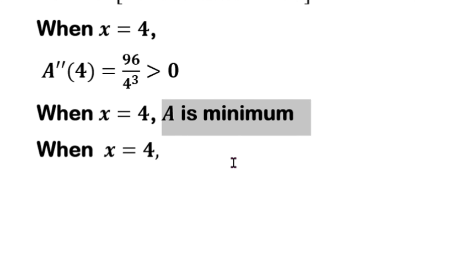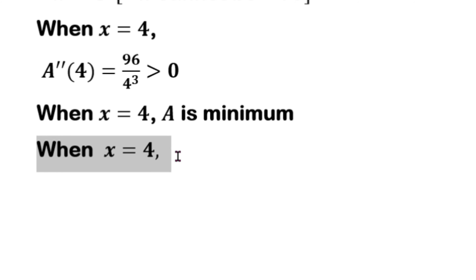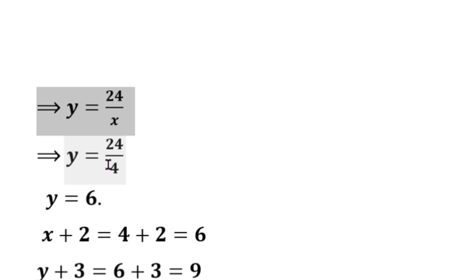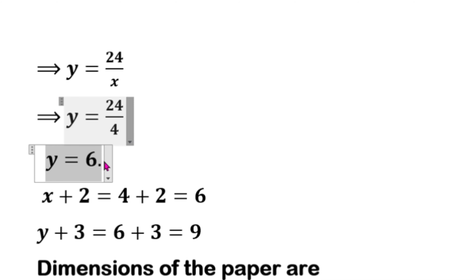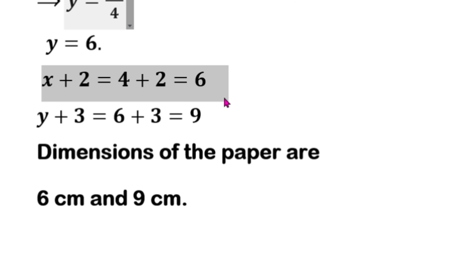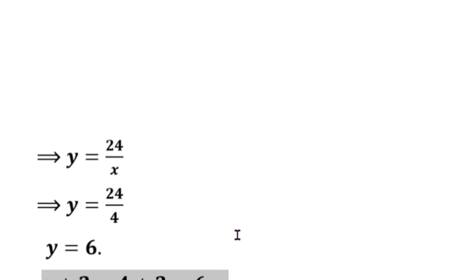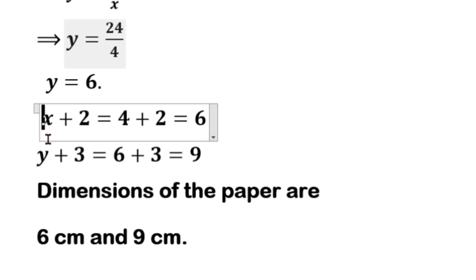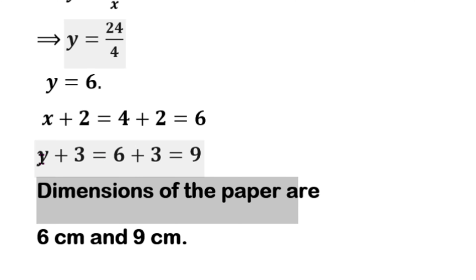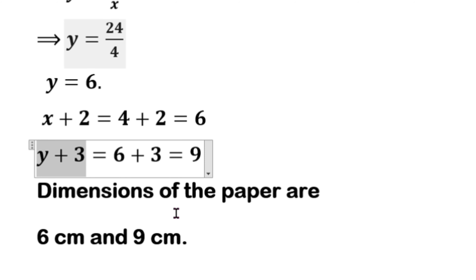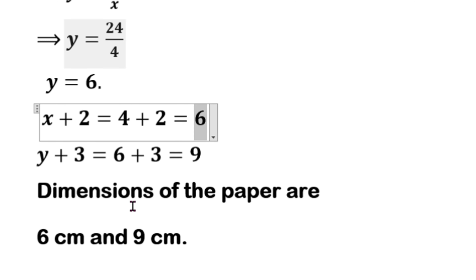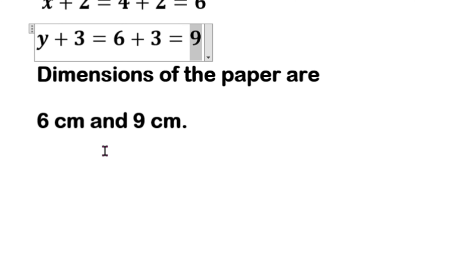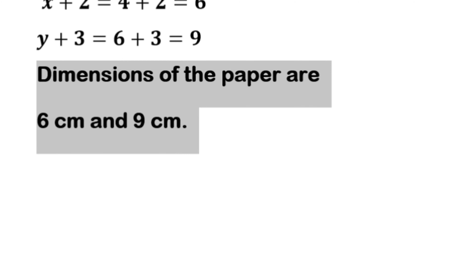Since the second derivative is positive, the area is minimum at x equals 4. When x equals 4, y equals 24 divided by 4, so y equals 6. The paper dimensions are: length equals x plus 2 equals 4 plus 2 equals 6 cm, and breadth equals y plus 3 equals 6 plus 3 equals 9 cm. So the required dimensions of the paper when area is minimum are 6 cm by 9 cm.